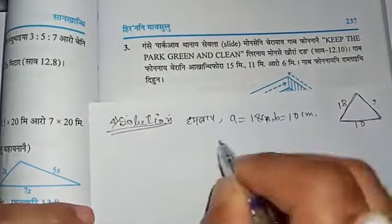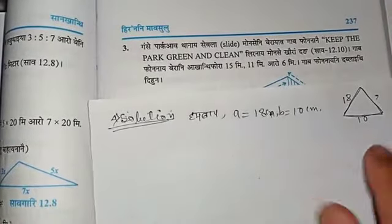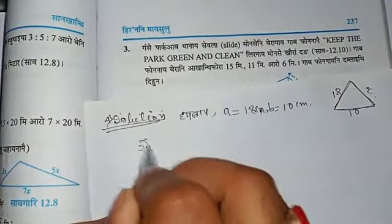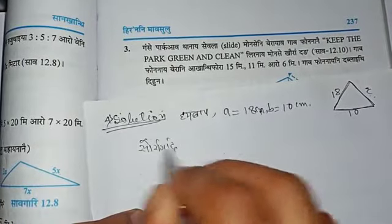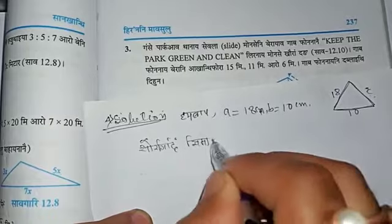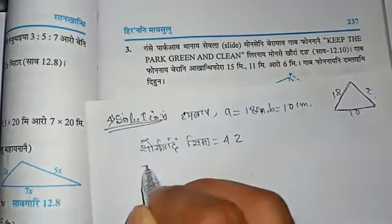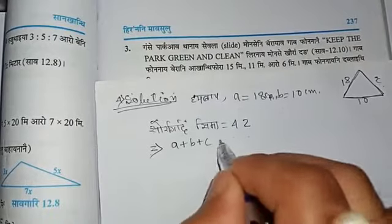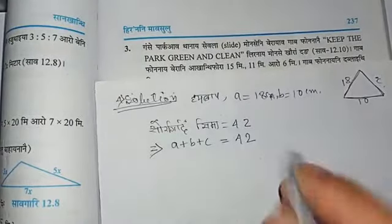The perimeter, the number of sides will be using the formula. This is the formula: a plus b plus c is equal to 42.